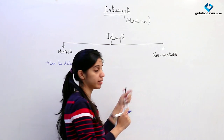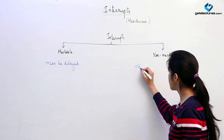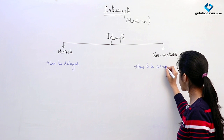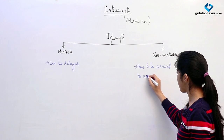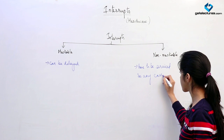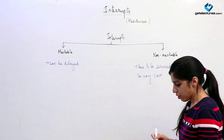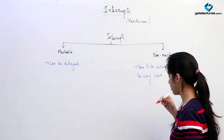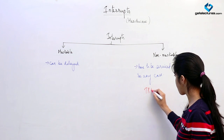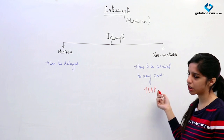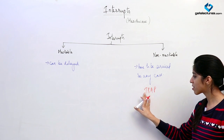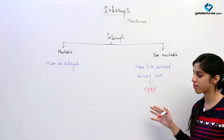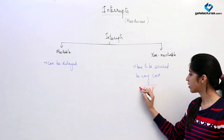Non-maskable interrupts cannot be delayed. They have to be serviced in any case. Of all the interrupts we have learned, trap is a non-maskable interrupt. Trap is given in cases when there is a huge problem like a power supply failure or some big problem — only then we give trap.